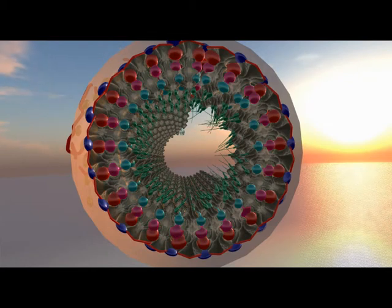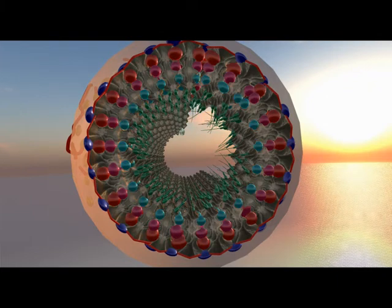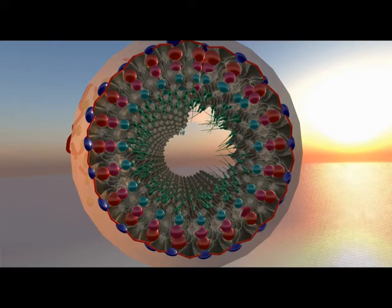These secondary spermatocytes will differentiate into spermatids, colored cyan. Spermatids differentiate into mature spermatozoa.